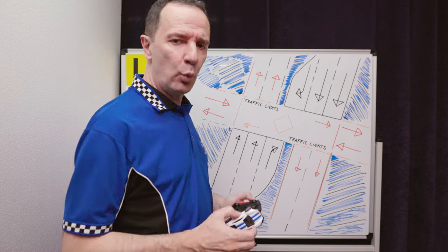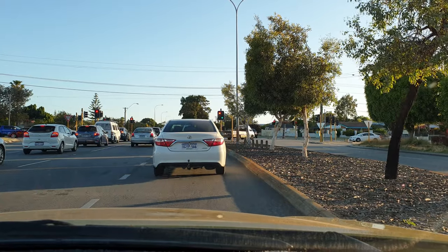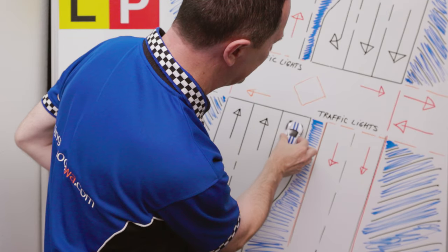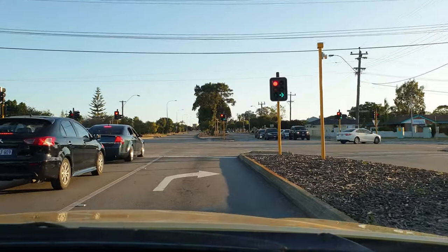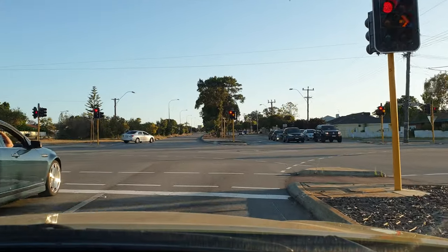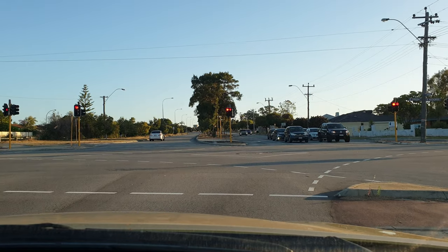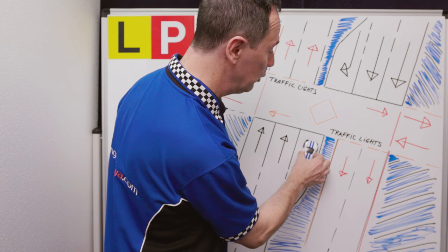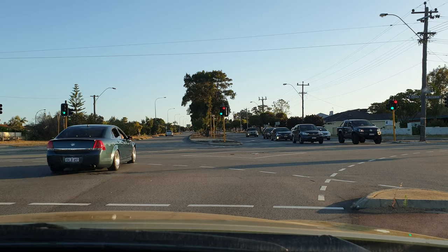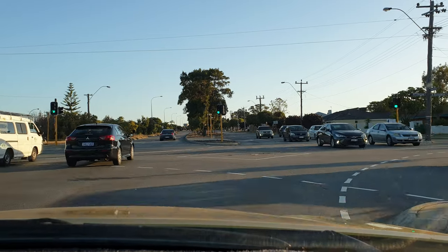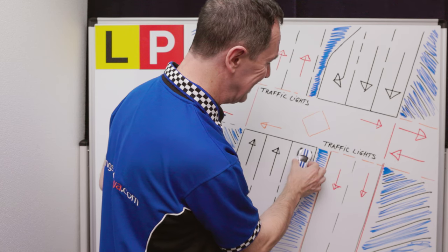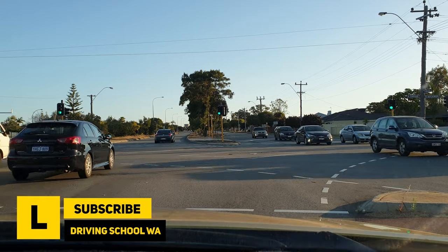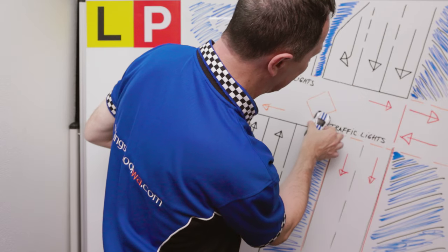In a situation where there's a green arrow and most of the traffic gets through, but at some point the green arrow changes, you would have to wait until it disappears. If most of the traffic has proceeded and while you were on the way towards the intersection it changes to the red arrow, you would have to wait until the red arrow disappears. When it does, you've got to give way to all the traffic going straight before you can commit and proceed.